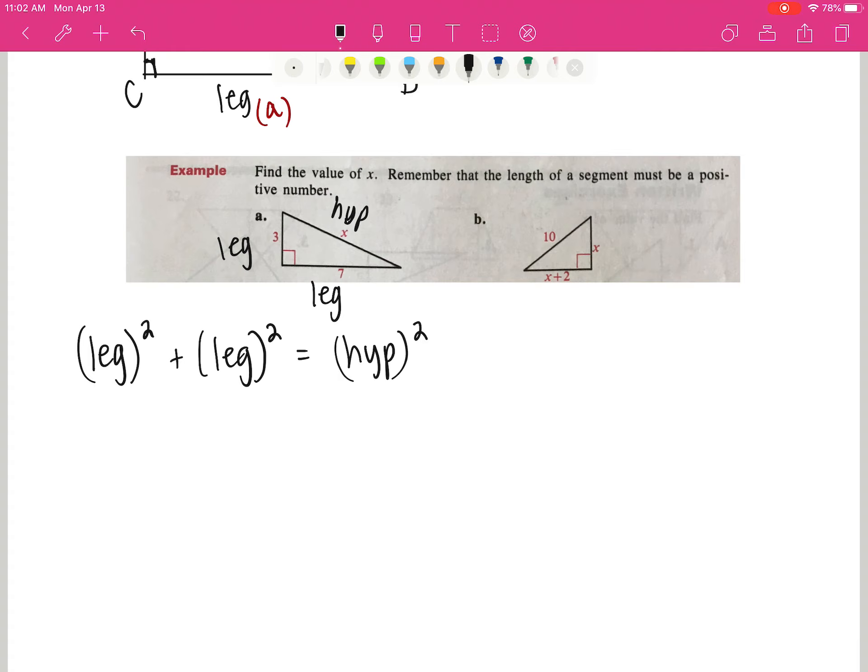So I'm just going to plug values in. I've got one leg is 3, so 3 squared. The other leg is 7, so that's 7 squared. And the hypotenuse is x, so that's x squared. That gives us 9 plus 49 equals x squared. 9 plus 49 is 58.